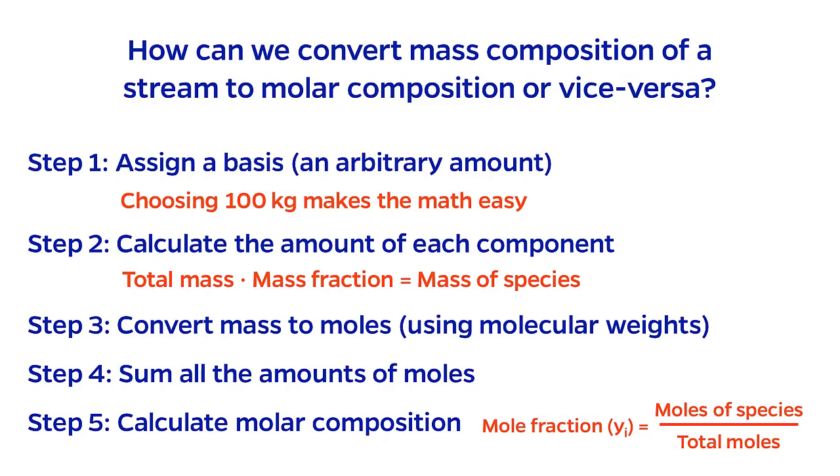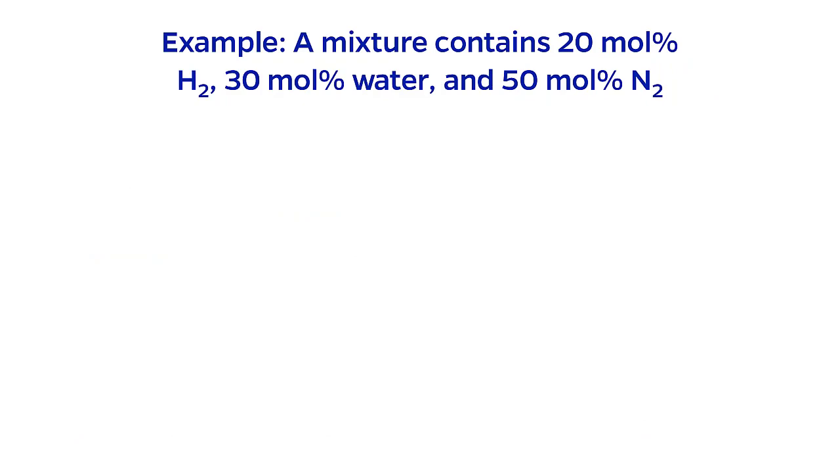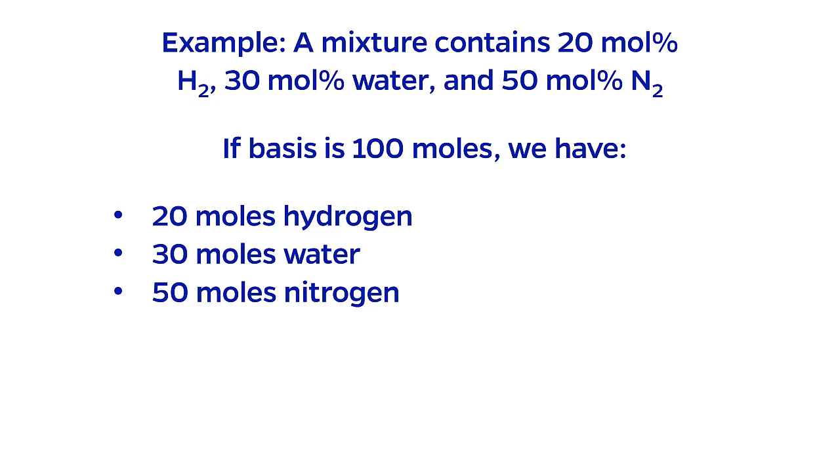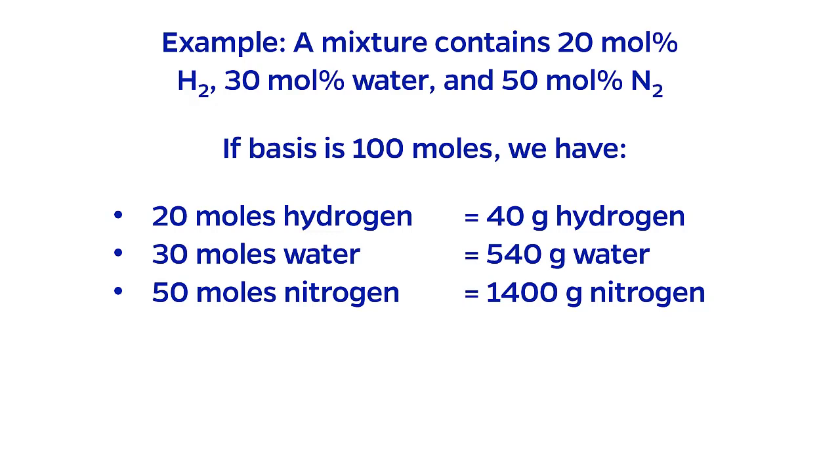Let's walk through a quick example. Let's say we start with a mixture that is 20 mole percent hydrogen, 30 mole percent water, and 50 mole percent nitrogen. And we want to convert this to a mass percent. Step one is to assign a basis. Again, 100 is an easy number to work with, so let's say 100 moles. Now we multiply the molar compositions times the basis to obtain the molar amounts for each component. Next, we convert these molar amounts into mass amounts for each component by noting the molecular weights. Hydrogen is 2 grams per mole, water is 18 grams per mole, and nitrogen is 28 grams per mole.